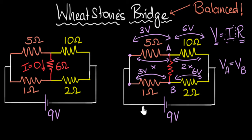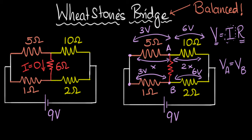Therefore there'll be no current flowing over here. That's why a balanced Wheatstone's network has no current. The whole idea is: when the ratio of the resistances are the same, the voltage also gets divided in the same ratio, and therefore these two points end up with the same voltage — making sure there is no potential difference. That's why the current goes to zero. And it doesn't matter what voltage you put across the circuit or what the actual values of the resistances are — all that matters is that the ratio here must be exactly the same as the ratio over here.